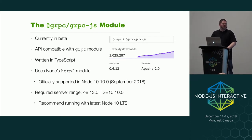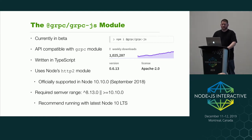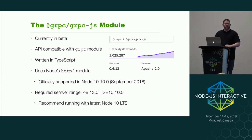gRPC-JS is API compatible with the gRPC module, so you can drop it in anywhere you were using gRPC before — the exception is if you're using features not yet supported, but all the basic ones are. It's built on top of Node's HTTP2 module, which was itself in beta until Node 10.10 in September 2018. When you require gRPC-JS, it does a version check — you have to be using Node greater than 8.13 or 10.10, though I recommend only using it with Node 10 and above. It also has no runtime dependencies other than semver.